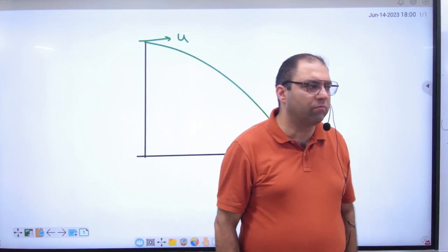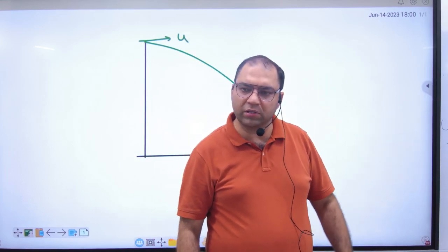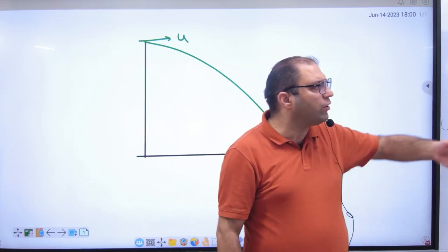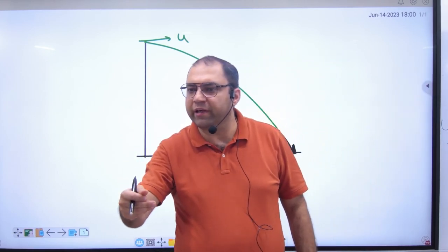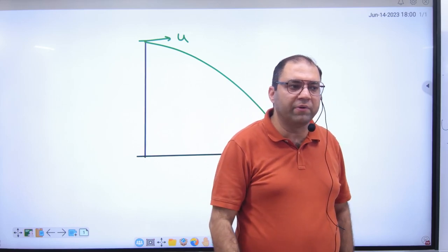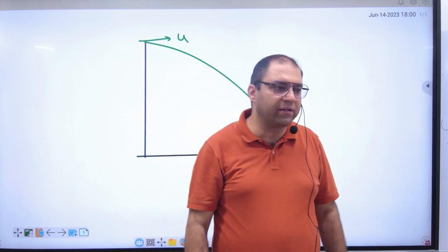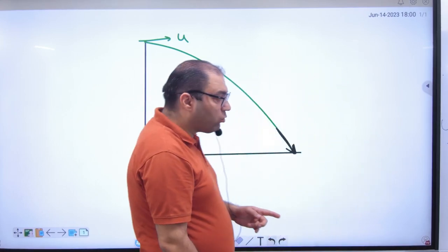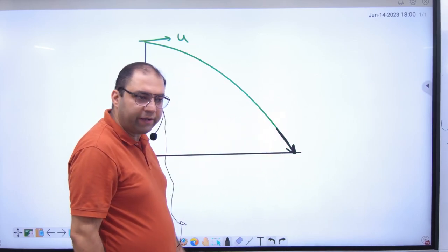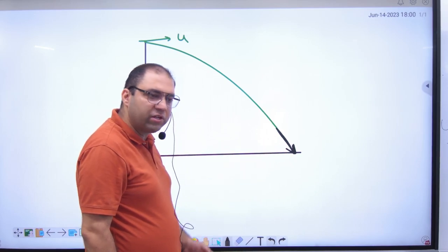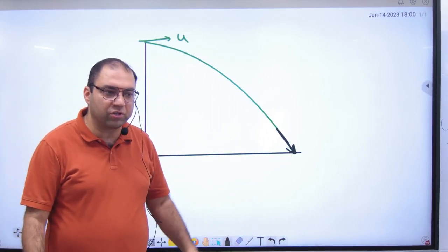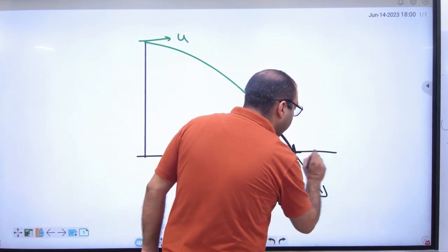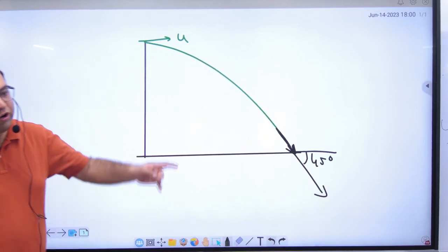Direction is direction — if I say north is this way, a wall in front doesn't stop north from being north. Similarly, the velocity vector's direction is fixed regardless of the ground. So make this vector imaginary, extend it, and measure what angle it makes with horizontal — that is 45 degrees.